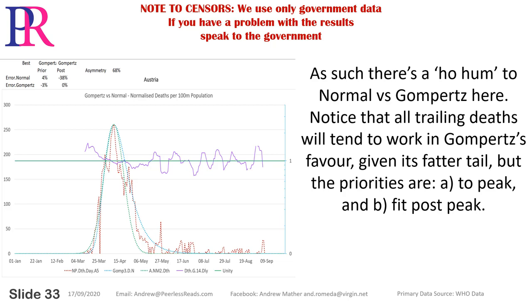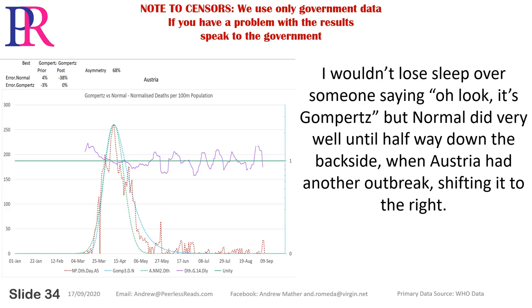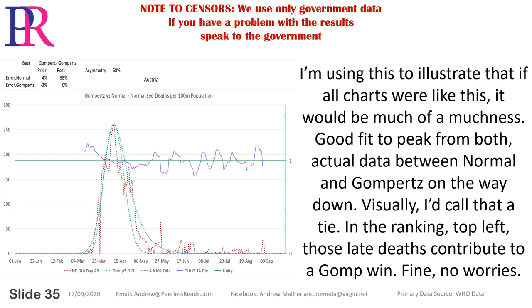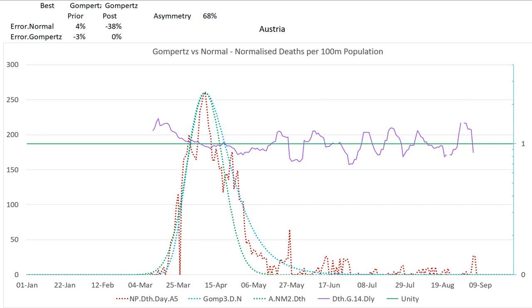The priorities are to peak and to the fit post-peak. Normal did very well until halfway down the backside, when Austria had another outbreak shifting it to the right. If all charts were like this it would be much of a muchness — good fit to peak from both, actual data between normal and Gompertz on the way down. Visually I'd call that a tie. In the ranking top-left those late deaths contribute to a Gompertz win. Fine, no worries.